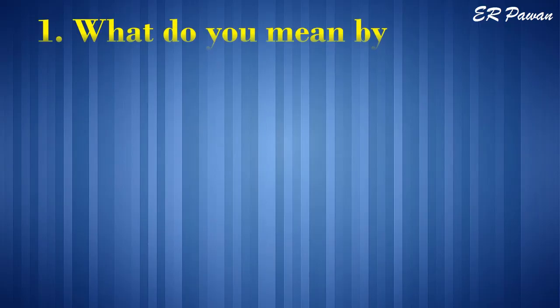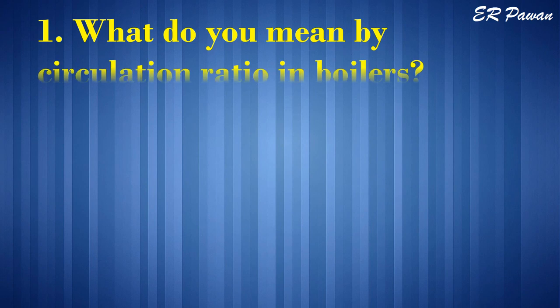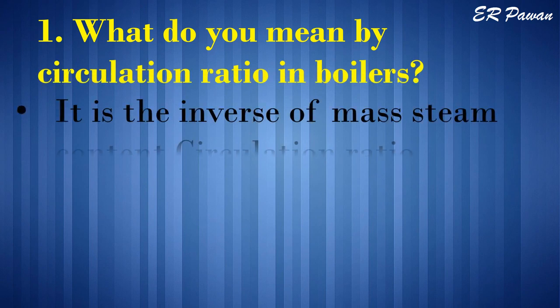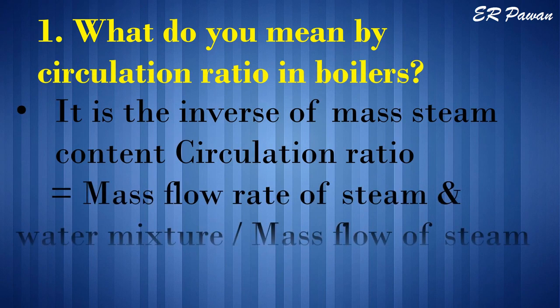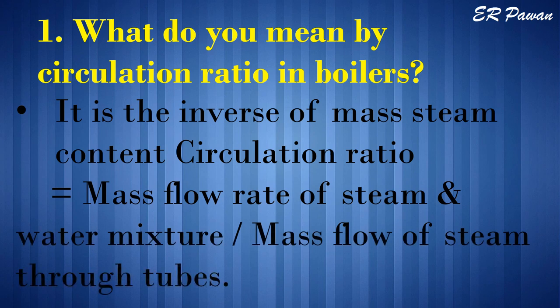Question 1: What do you mean by circulation ratio in boilers? It is the inverse of mass steam content. Circulation ratio equals mass flow rate of steam and water mixture divided by mass flow of steam through tubes.